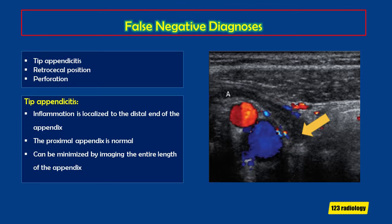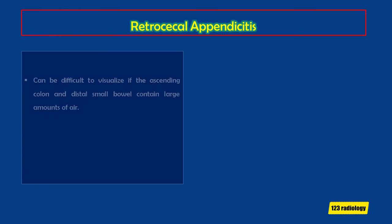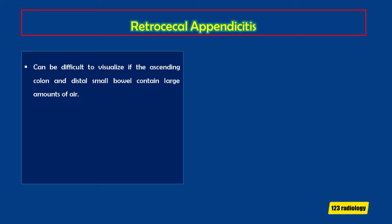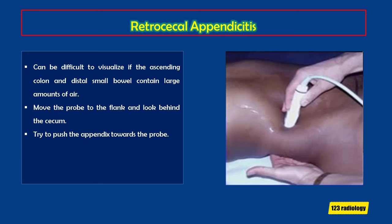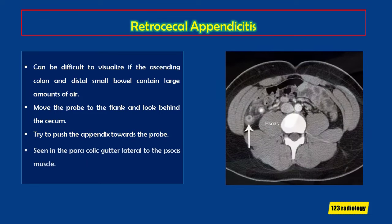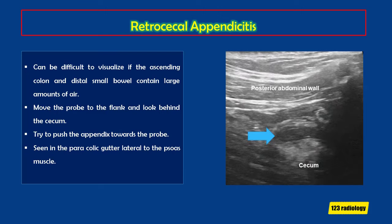A retrocecal appendix can be difficult to visualize, particularly if the ascending colon and distal small bowel contain large amounts of air that cannot be easily compressed. In retrocecal appendicitis, move the probe to the flank and look behind the cecum, or push the appendix towards the probe by placing the other hand in the flank and pushing anteriorly. The majority of appendices are intraperitoneal medial to the psoas muscle, but some will be retrocecal, seen in the paracolic gutter lateral to the psoas. In this case, the appendix is well visualized by posterior approach through the flank, seen enlarged with increased echogenicity of surrounding fat.